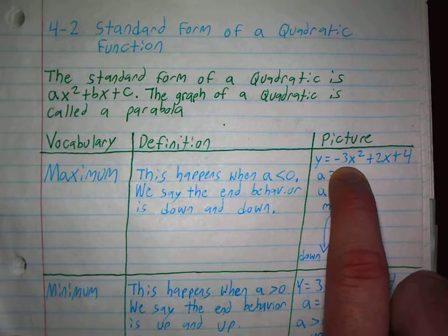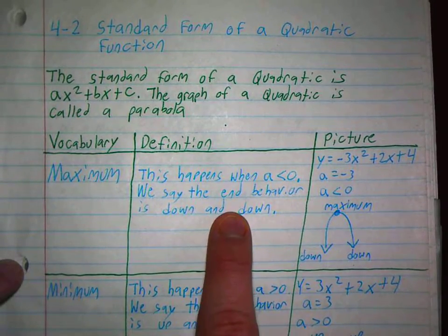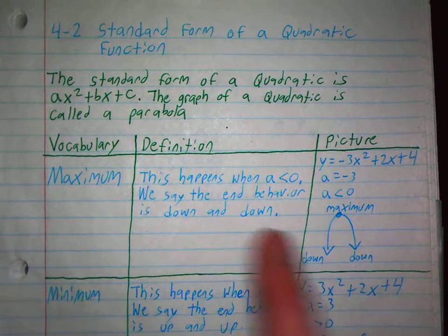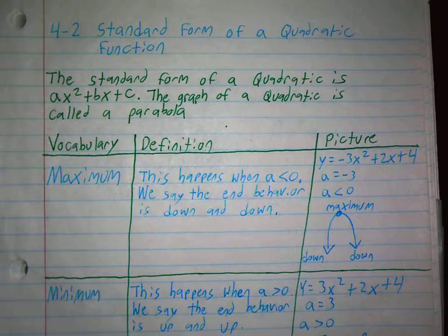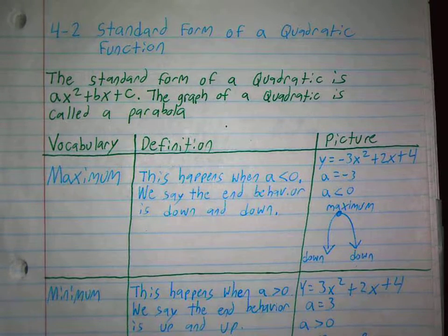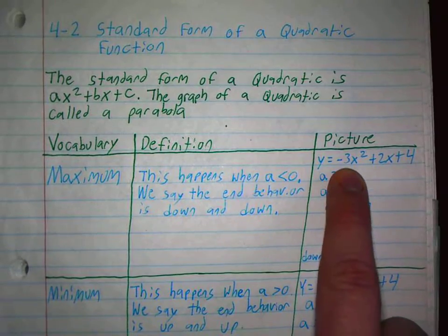The parabola either opens up and up or down and down. One of the things to know from algebra 3 is what direction does it open? You look at the leading coefficient for this quadratic, it's negative.